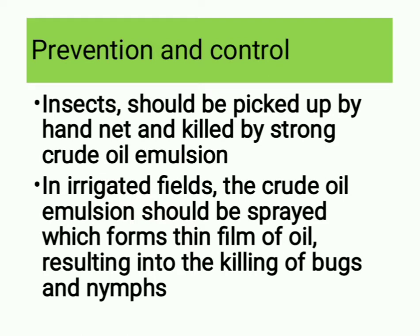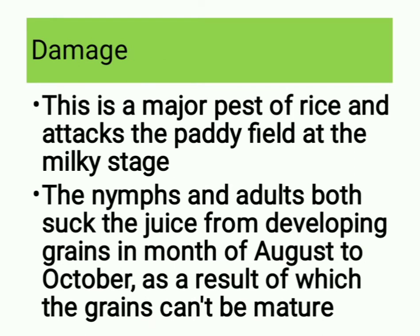Prevention and control: insects should be picked up by hand net and killed by strong crude oil emulsion. In irrigated fields, the crude oil emulsion should be sprayed, which forms a thin film of oil, resulting in the killing of bugs and nymphs. Damage: this is a major pest of rice and attacks the paddy field at the milky stage.